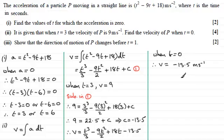Well, this is good because in part 3, it says show that the direction of motion of P changes before t equals 1. So if I was to substitute now t equals 1 into our formula here for v, let's see what we get. So when t equals 1, what does v equal?